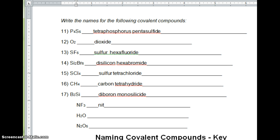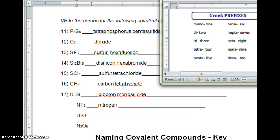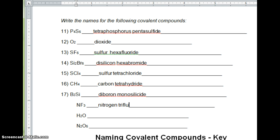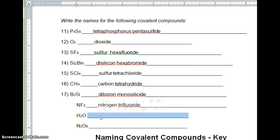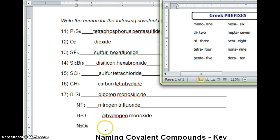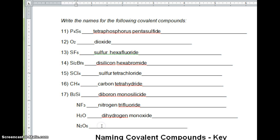So what would this one be? Nitrogen trifluoride. What about our next one? See if you can do water all by yourself. Hit the pause button. And it would be dihydrogen monoxide. You have to have the mono because it's the second element and there's just one of them. Go ahead and hit pause and get the last one. The last one is dinitrogen pentoxide because there are five. And again, if you were thinking it would have been pentaoxide, they only write one of the vowels.